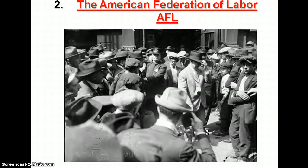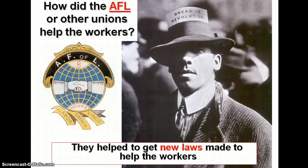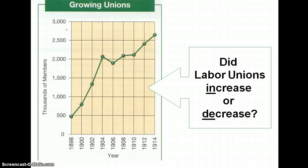The most famous union that arose during this time period — and still with us today — is the American Federation of Labor, otherwise known as the AFL. It worked to get new laws made to help workers. Did labor unions increase or decrease from 1898 to 1914? I'm going to trace the line here, and right here is when the Triangle Shirtwaist Factory fire occurred.